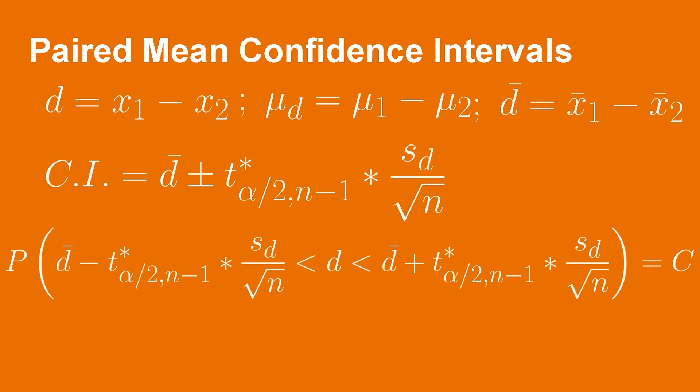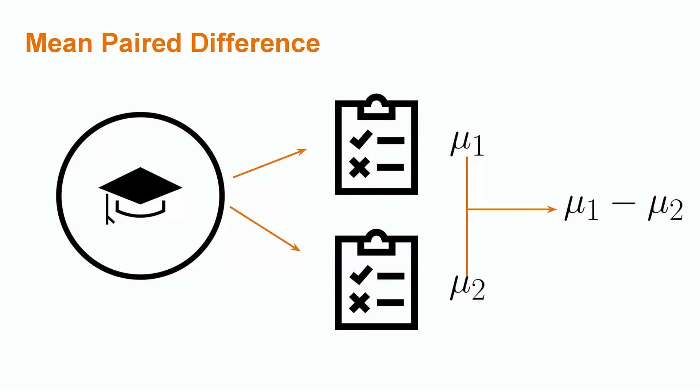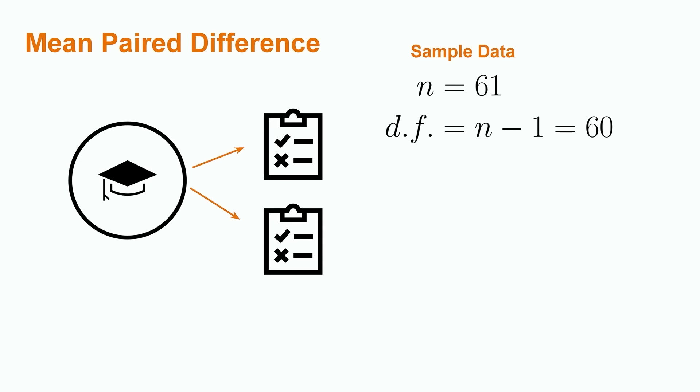Let's see how it works with our test score example. The professor wants to know about the progression in testing scores over the course of many years, but they've lost most of their gradebook. They only managed to save results for 61 students, so the sample size is n equals 61. For this type of problem, the degrees of freedom — which are necessary to calculate the t multiplier — are equal to the sample size minus 1, giving us 60 degrees of freedom.